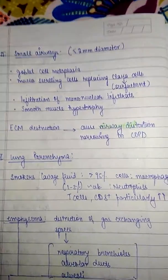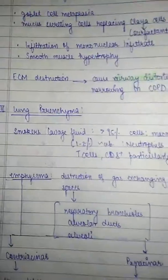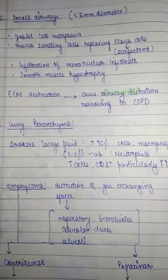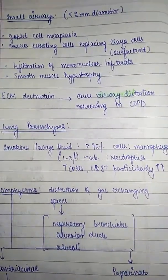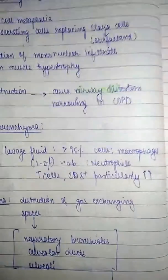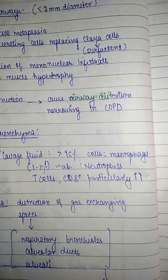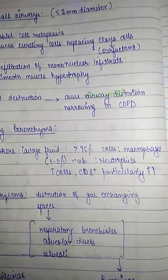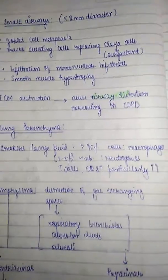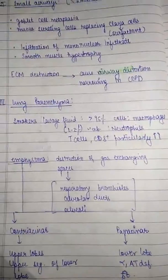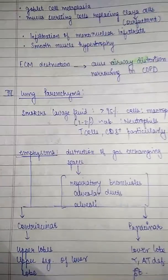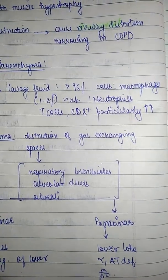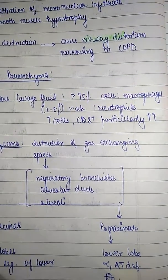Regarding lung parenchyma, when we take lavage fluid from a smoker, more than 95% of the cells are macrophages; neutrophils are about 1–2%. T cells, and CD8 cells particularly, are increased.